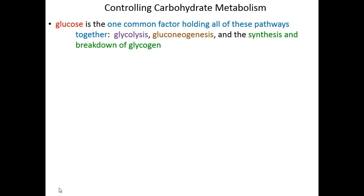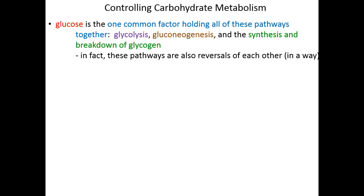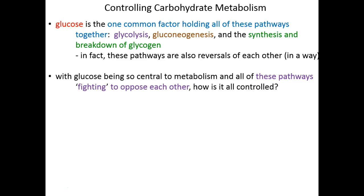We're talking about how the different glucose metabolism pathways in a single cell are tied together, and also how glucose metabolism is tied together within multi-organ systems. Glucose is the one common unifying factor across glycolysis, gluconeogenesis, the citric acid cycle, and the synthesis and breakdown of glycogen. Some of these pathways are essentially reversals of each other — gluconeogenesis is the reversal of glycolysis, and glycogen synthesis is the reversal of glycogen breakdown.